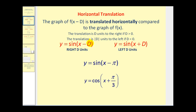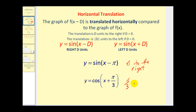The translation is the absolute value of d units to the left if d is less than zero. And if d is negative, minus a negative d, it would be x plus d. So again, a little confusing, but if it's in the form of y equals sine of x plus d, it will be translated d units left. For y equals sine of the quantity x minus pi, this is a horizontal translation pi units to the right. For y equals cosine of the quantity x plus pi over three, it will be pi over three units to the left.